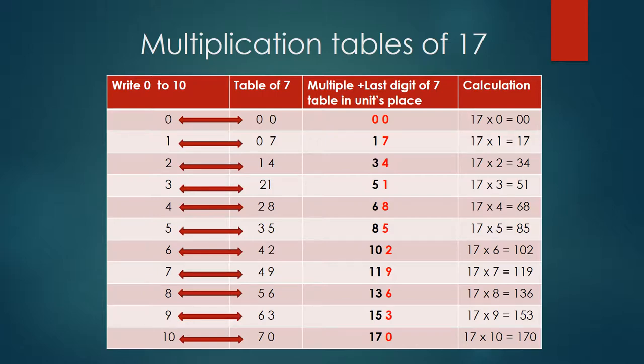Just observe number 17. Number 17 is made up of two digits: 1 and 7. Now refer to this table. I have written here, write numbers from 0 to 10 in a vertical order. So we are writing these numbers in vertical order all the way from 0 to 10.